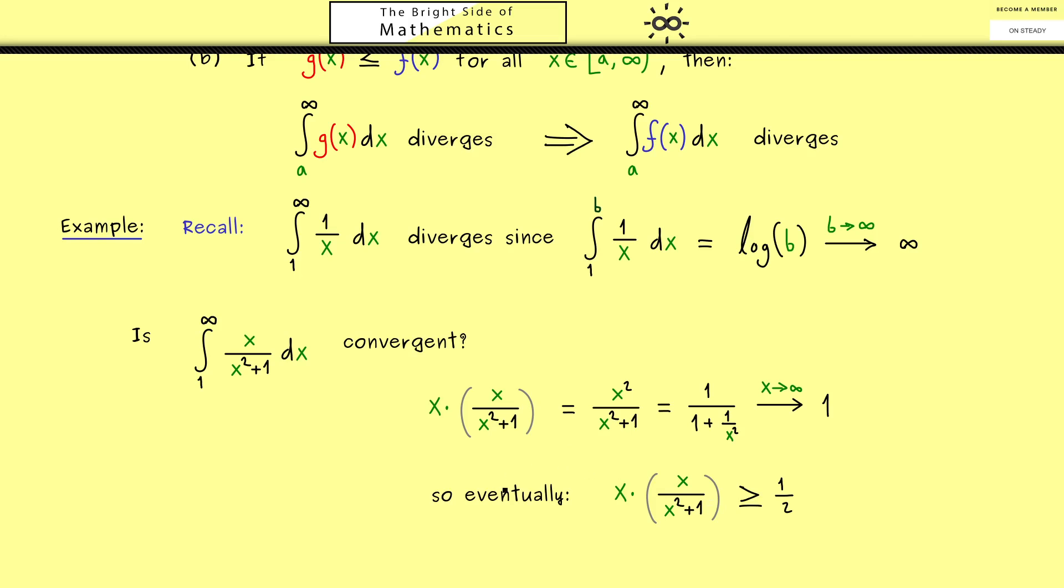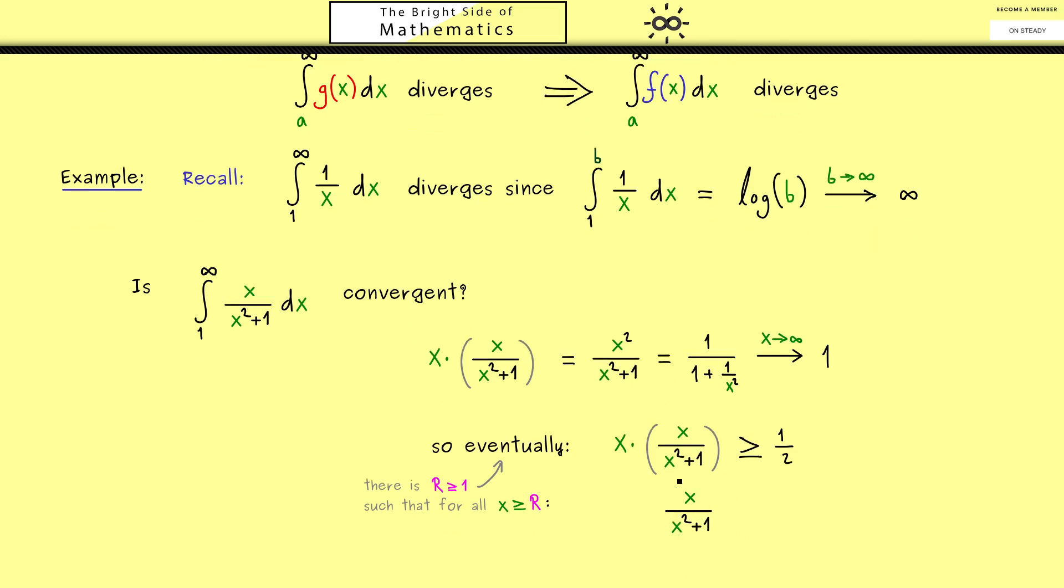Namely this limit here tells us that eventually this whole thing here is greater than 1 half. And here please recall eventually means that we find a bound such that after this bound it holds for all numbers x that are greater than this bound. Please note here it's only important what happens eventually. And then we can reformulate the inner quantity and find that our function here is always greater or equal than 1 half times 1 over x. And there we already know the function on the right hand side with the integral will give us divergence.